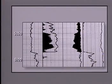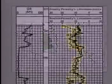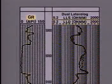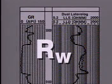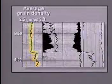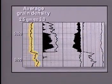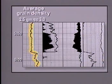This is a computer-generated log of our West Texas example. This general interpretation model uses the density neutron, resistivity, and gamma-ray logs, along with information on the resistivity of the formation water. On the left side of the log in track 1, the average grain density of the formation solids is recorded in grams per cubic centimeter.